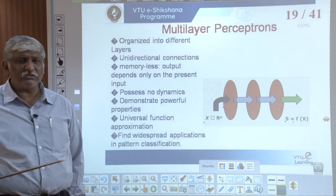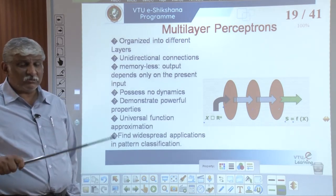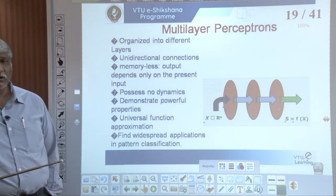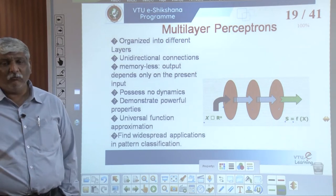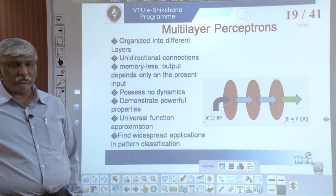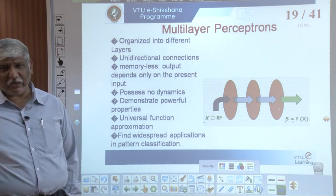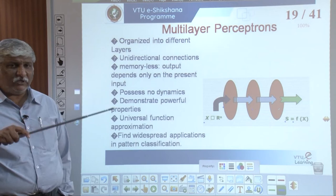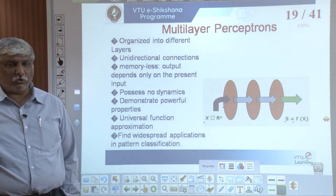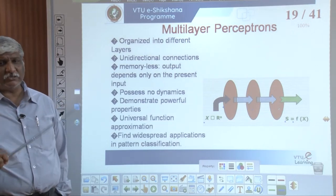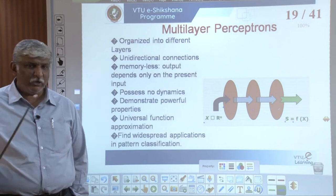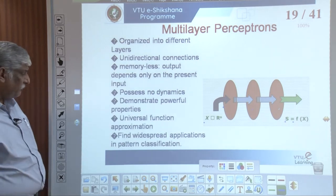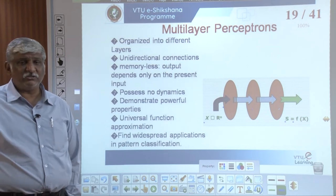The multilayer perceptron demonstrates powerful properties including universal functional approximation and widespread applications in pattern classification. Recurrent neural networks are non-linear and dynamic — they process time-series data like audio or video where the signal amplitude varies with time. The new state of a recurrent network is a function of the current input and the present state of the network, so memory is needed to store that present state.